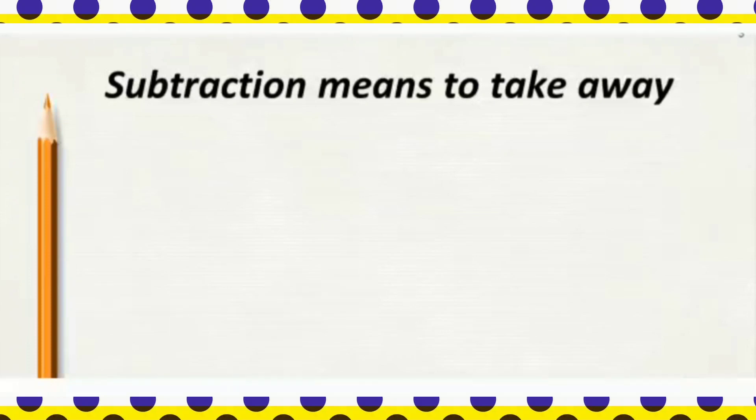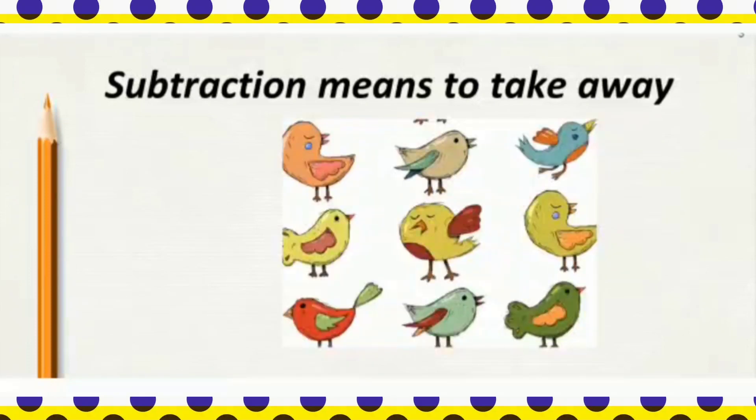I have 9 birds as pets. Among 9 birds, here are 9 birds: 1, 2, 3, 4, 5, 6, 7, 8, 9. Among 9 birds, 3 birds flew away. 1, 2, 3. 3 birds flew away. How many birds are left?